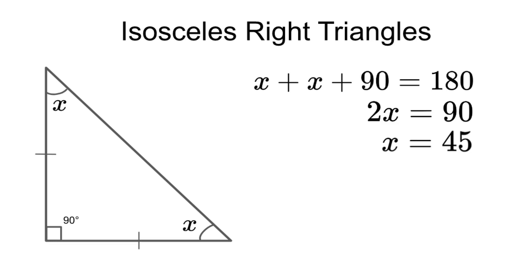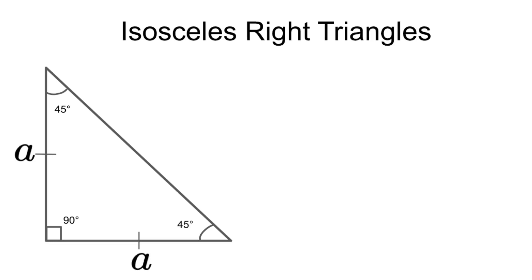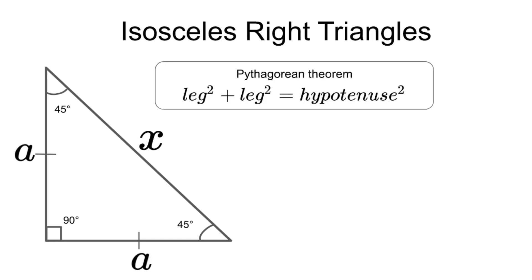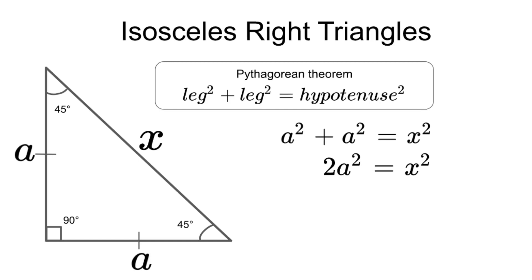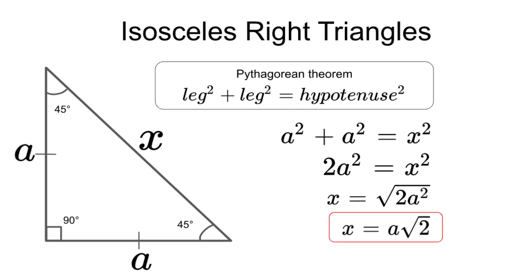Let's now try to find out the relation between the legs and the hypotenuse. Let's call the equal sides of the triangle A and try to find the hypotenuse. We will use the Pythagorean theorem: A squared plus A squared equals X squared, and through calculations we find that X equals A multiplied by the square root of 2.